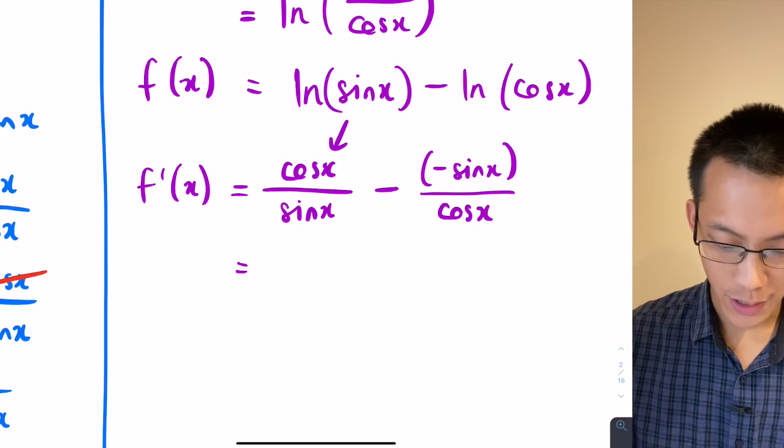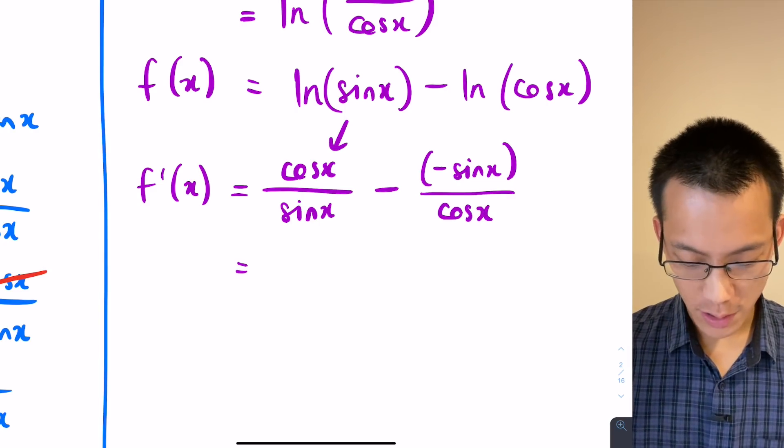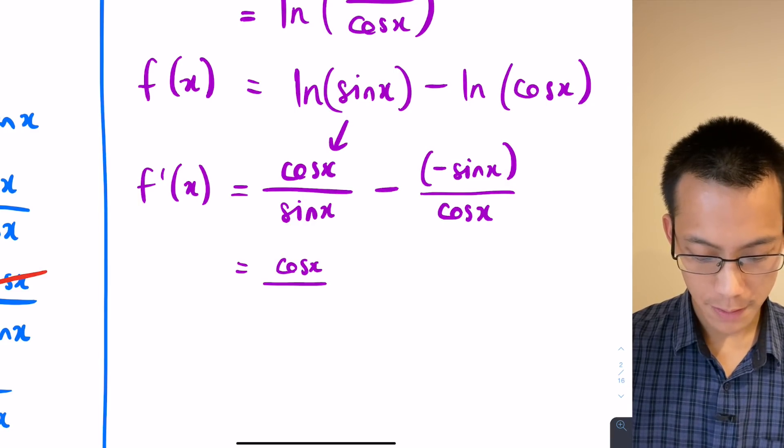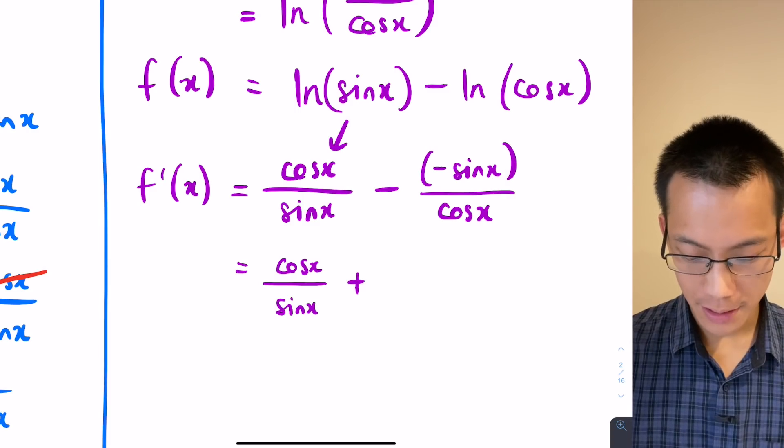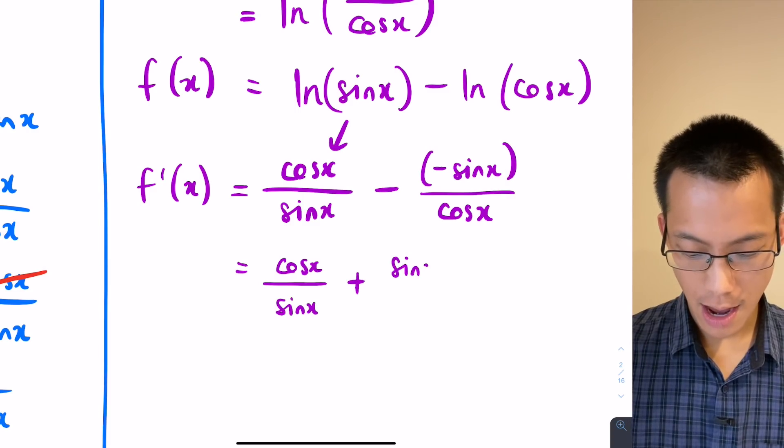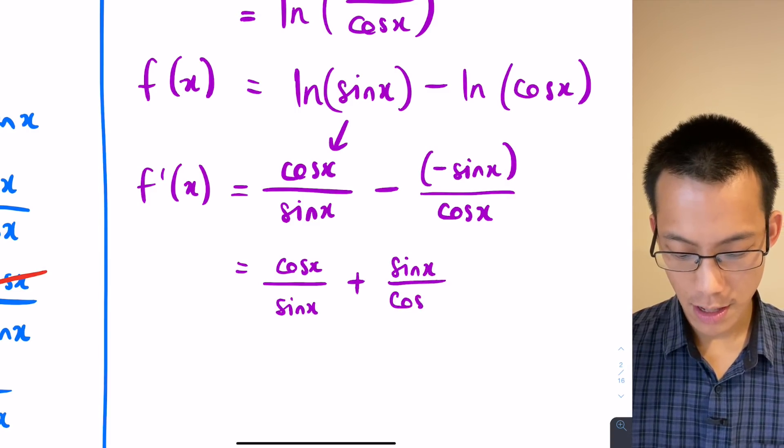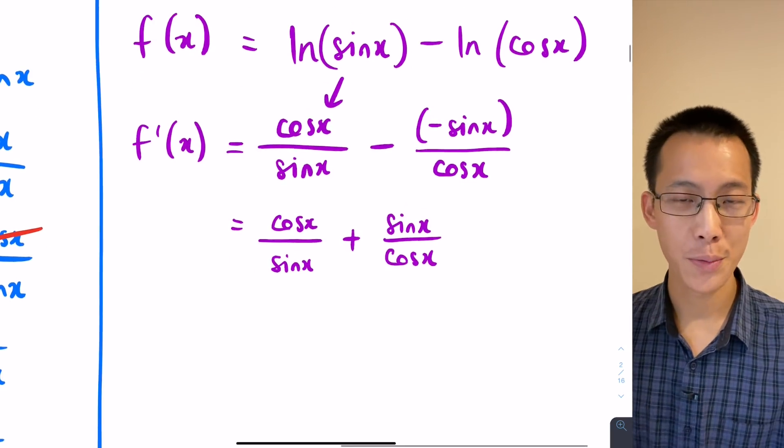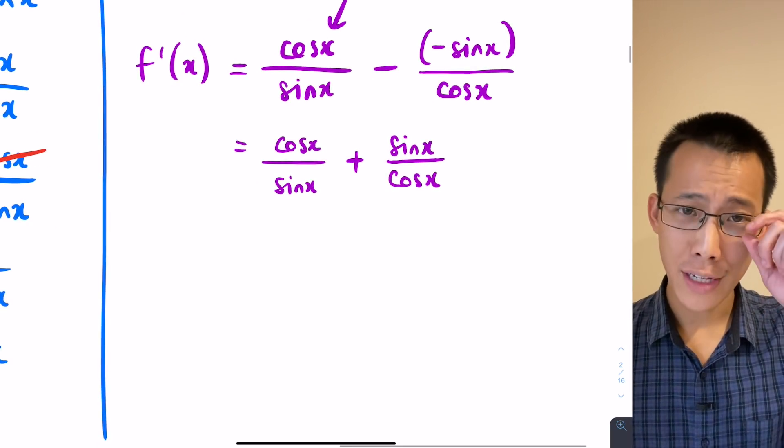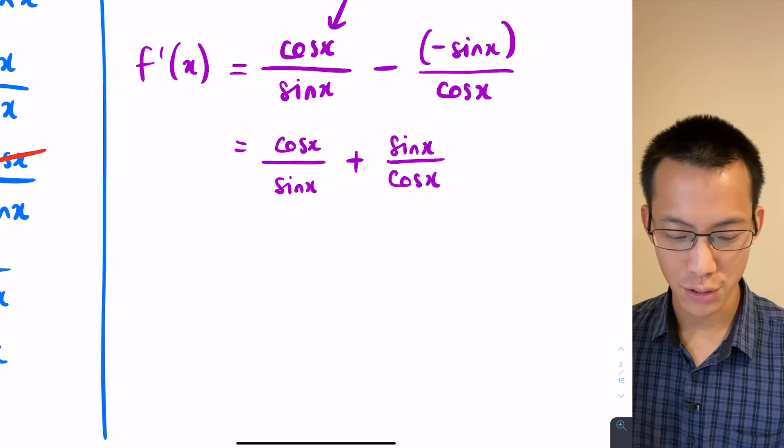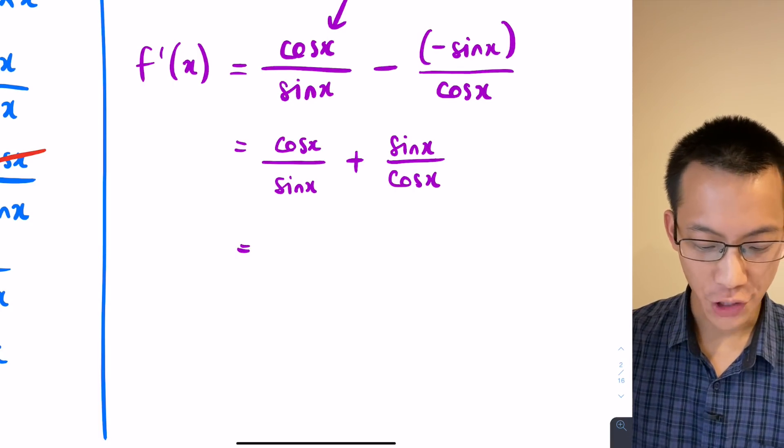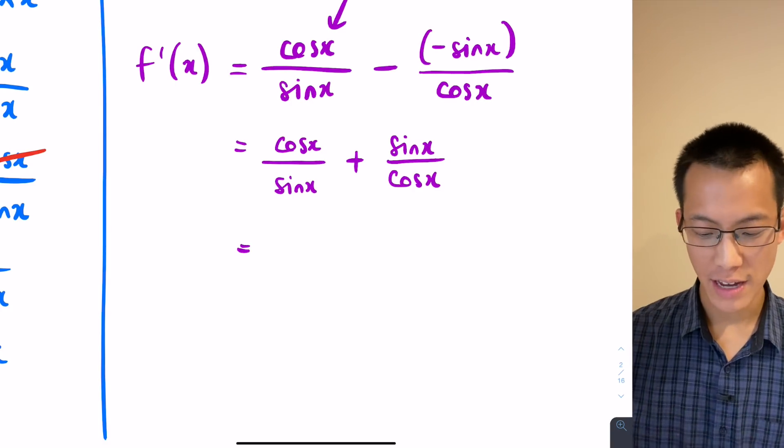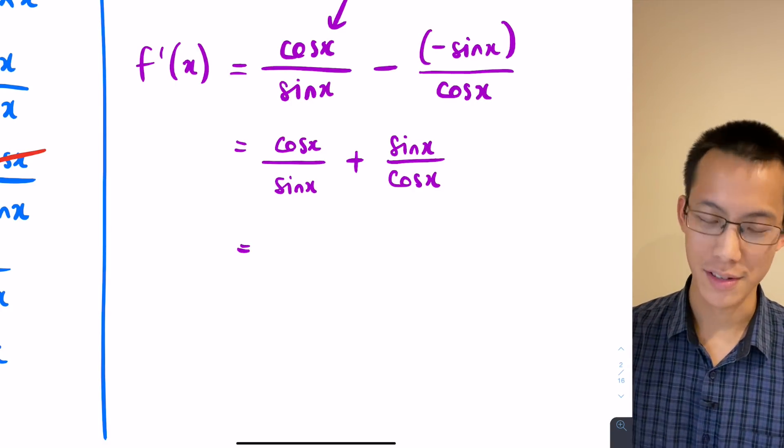Alright, so what we got here: cos x over sin x. I'm just going to leave that for one moment. I will take that double negative and I'll say, well, that's a plus, and I'll write it as sin x over cos x. And now I've got two functions, or two fractions rather, with different denominators, so I need to get a common denominator so that I can actually combine these two.